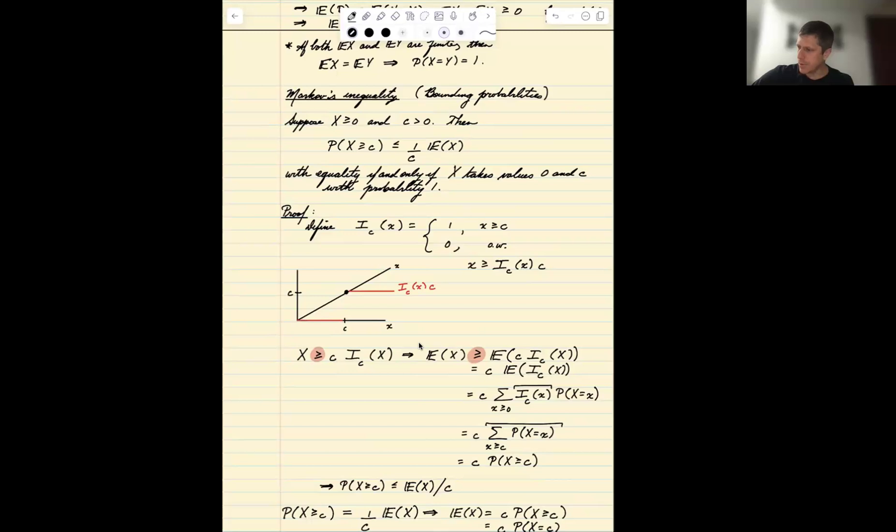So an example of this would be: let's say we have x greater than or equal to zero and the expectation of x equals 10, and we're interested in the value c equals 100. Then we know that the probability that x is greater than or equal to 100 cannot be bigger than the expectation of x, 10, divided by 100. So it can't be bigger than 10%. Now in many cases in this situation, it actually would be much smaller than 10%. The fact that this relationship holds for all such random variables x having this expectation is a bit too general for most applications.